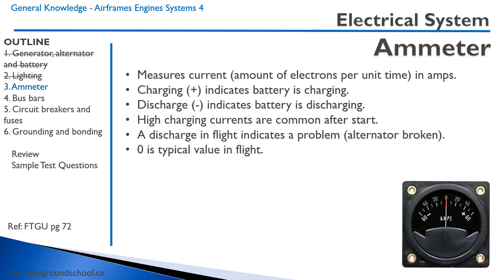Aircraft typically have an ammeter — an instrument that indicates current. Current is the amount of electrons per unit time, measured in amps. When we have a positive reading on the ammeter, it means the battery is charging. A negative or discharge reading indicates the battery is discharging.